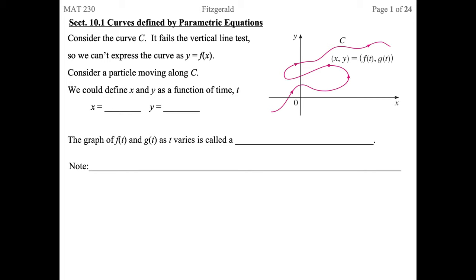A curve can be defined by parametric equations. If you look at the curve to the right, it fails the vertical line test, so we can't express it as y equals f of x. Consider a particle moving along the curve — that point x, y, and the direction in which it's going. We could define x and y as functions of time t: x would be f of t, y would be g of t.